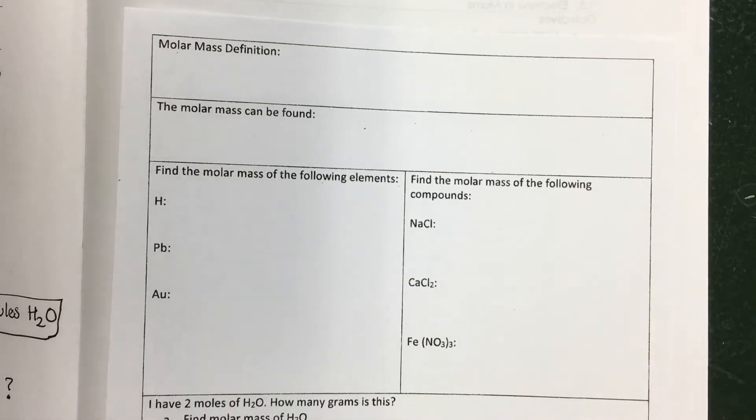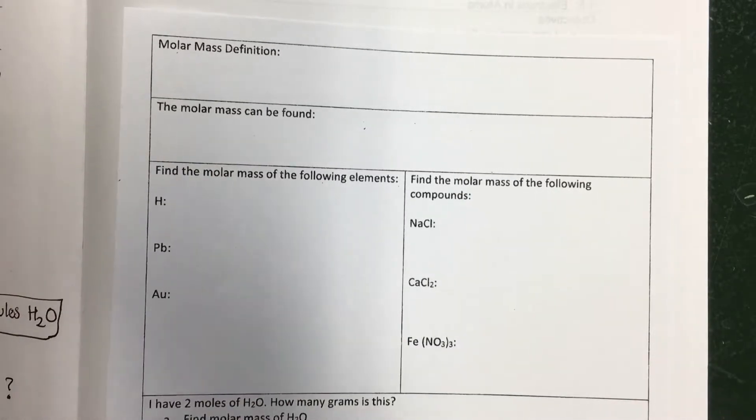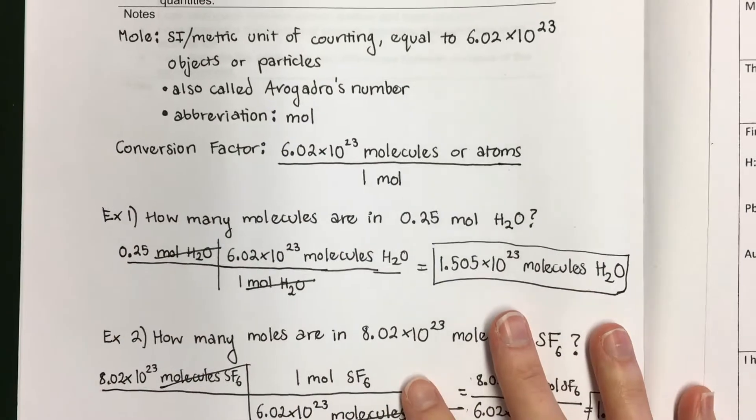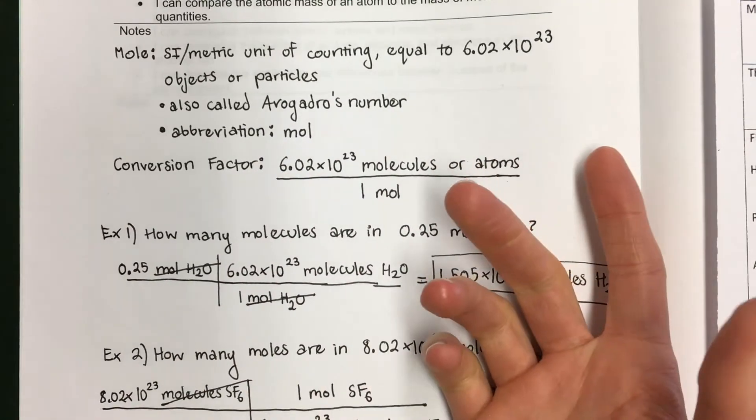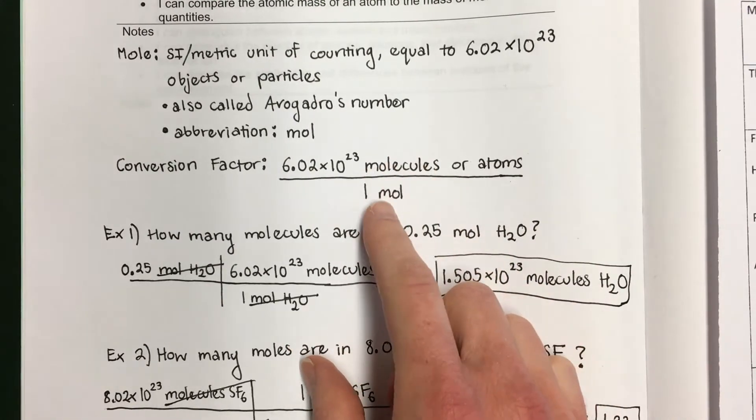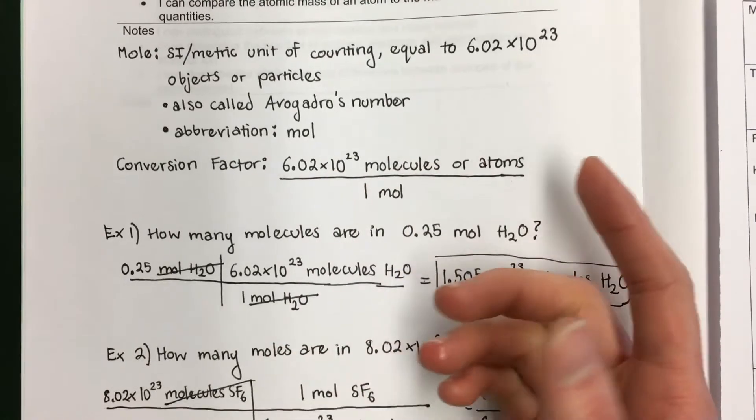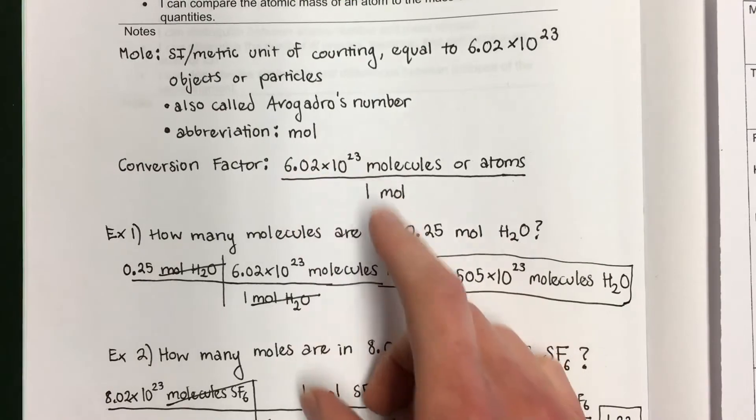Remember, a mole is 6.02 times 10 to the 23rd of anything. It's a number we use to count with. We could count anything with 6.02 times 10 to the 23rd, like pencils. But we like to count atoms and molecules with this big number because they're so small.